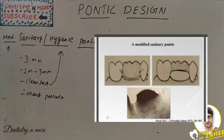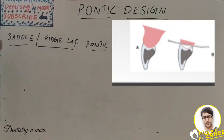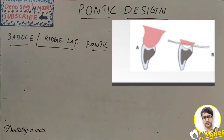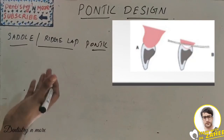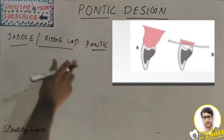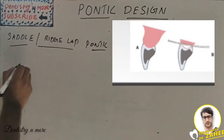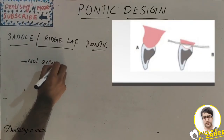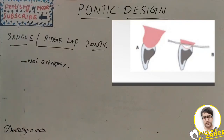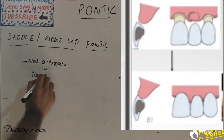The saddle pontic or ridge lap pontic has a concave fitting surface that overlaps the residual ridge buccolingually. It simulates the contours and emergence profile of the missing tooth on both sides of the residual ridge, giving good aesthetic appearance. However, the main problem is that the concave gingival margin of the pontic is not accessible for cleaning with dental floss, leading to plaque accumulation and ultimately tissue inflammation.